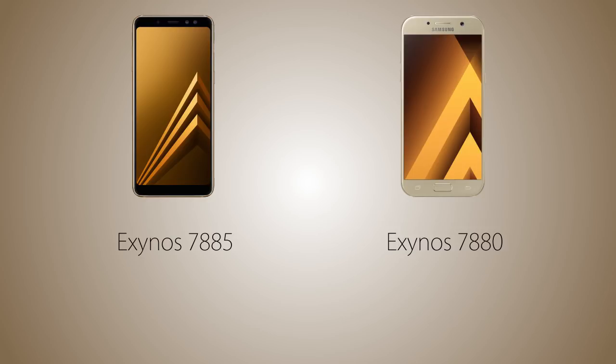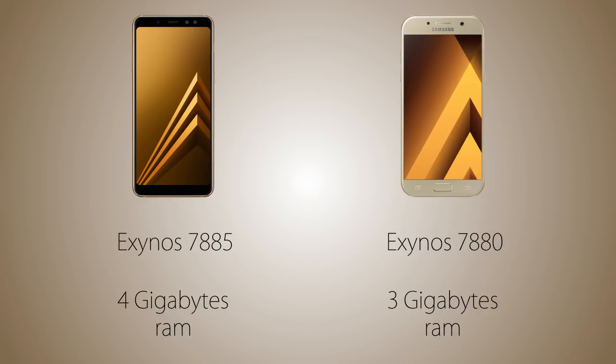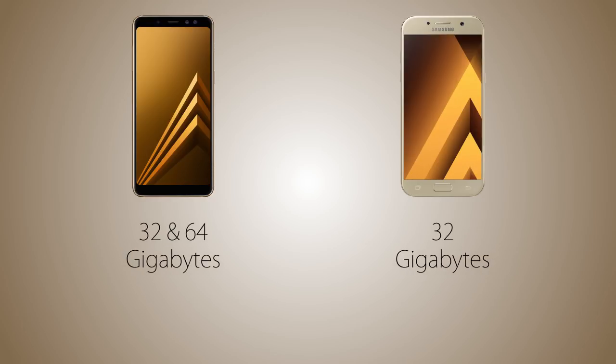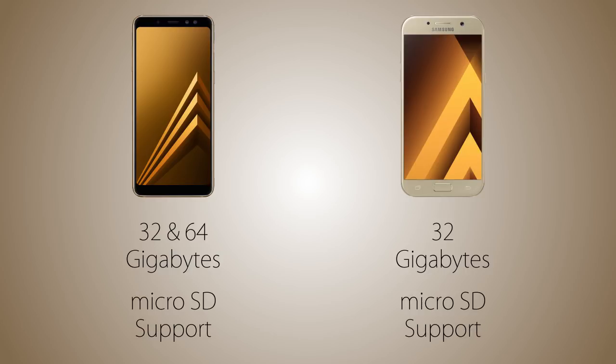The RAM is going to be 4GB on the A8 vs 3GB on the A5. As for storage, both handsets are coming with 32GB of internal storage, while there is also going to be a 64GB variant of the A8 2018. You can increase the storage via microSD card on both handsets.